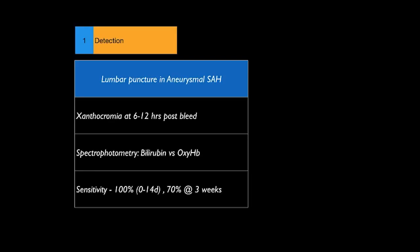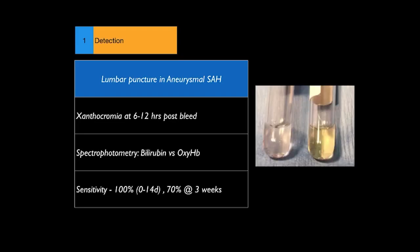Lumbar puncture in SAH focuses initially on detection of xanthochromia — the yellowish discoloration of CSF seen in one of the test tubes. This can be seen by the naked eye but is better appreciated by spectrophotometry. Xanthochromia results from degradation of blood and release of bilirubin, which stains the CSF. CSF must be stored away from light to prevent degradation. Sensitivity of lumbar puncture is almost 100% for the first two weeks and as high as 70% in the third week.